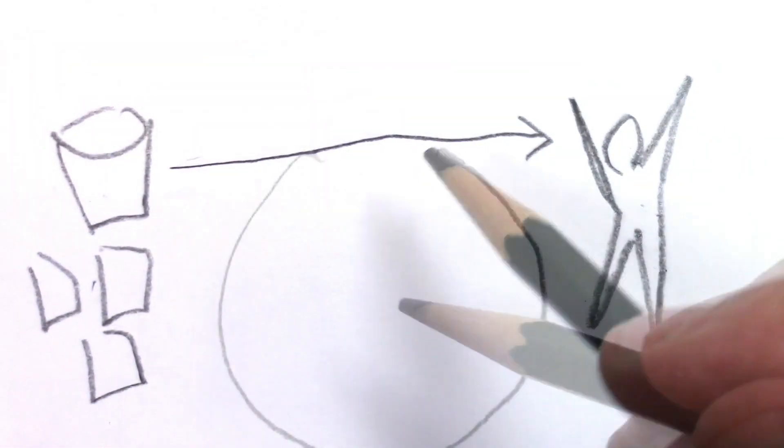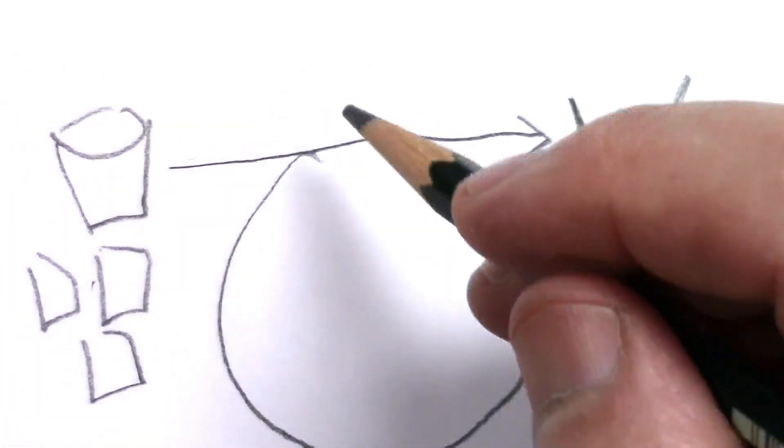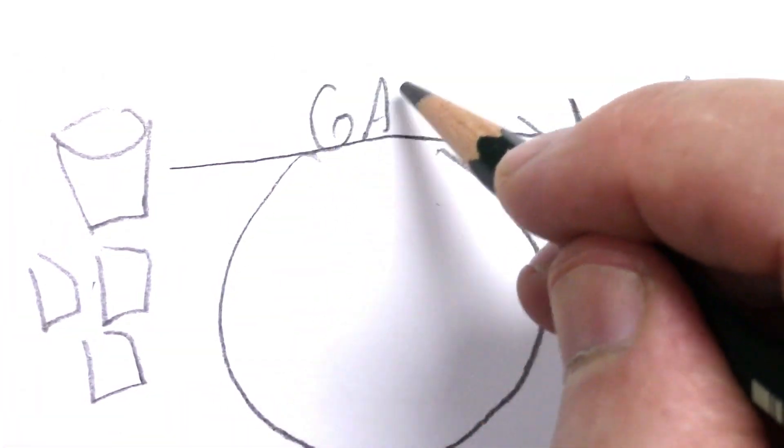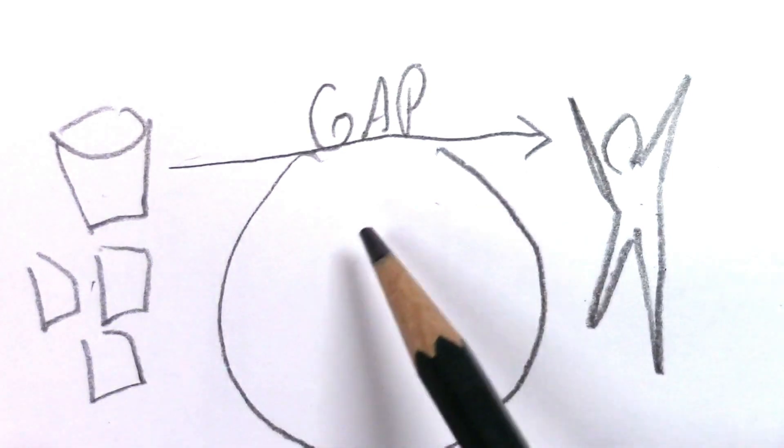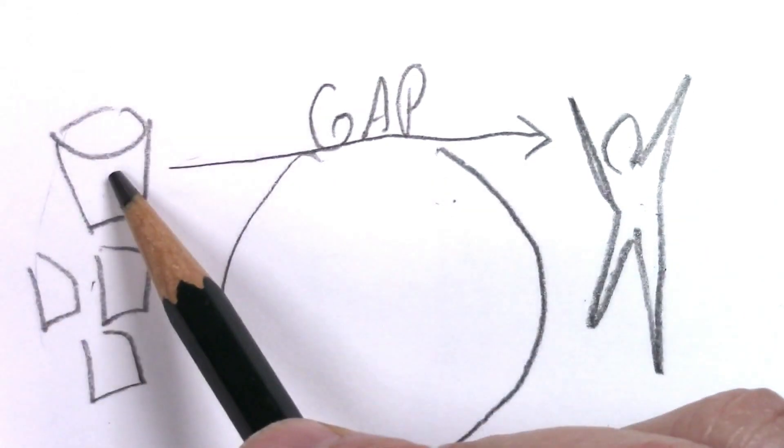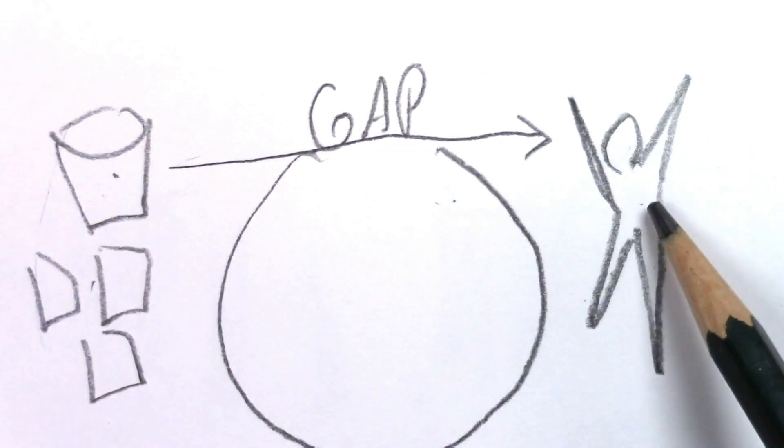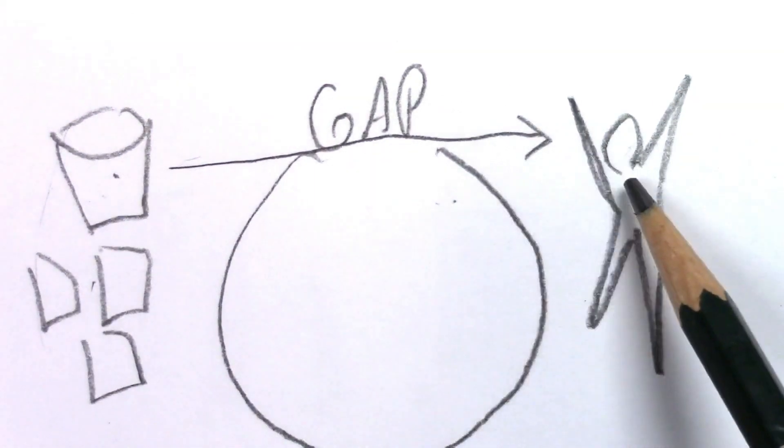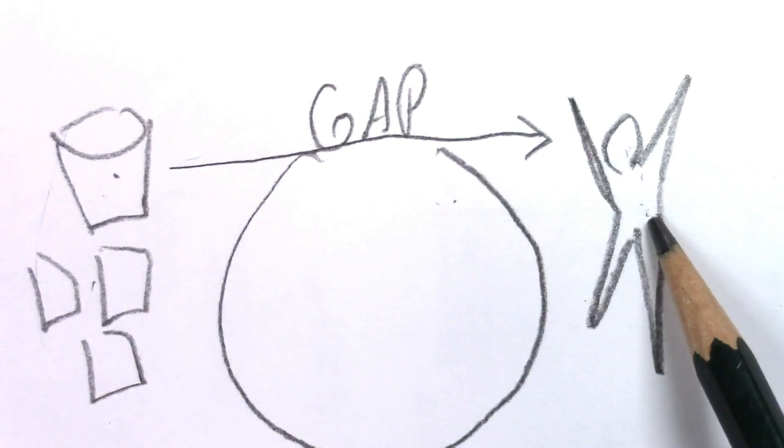But the answer is, there's a giant gap right here, and I call it the gap. It's all the things that I don't know, or all the things that confuse me between the color samples and this wonderful piece that I'm imagining, or just the idea of the piece that I'm imagining.